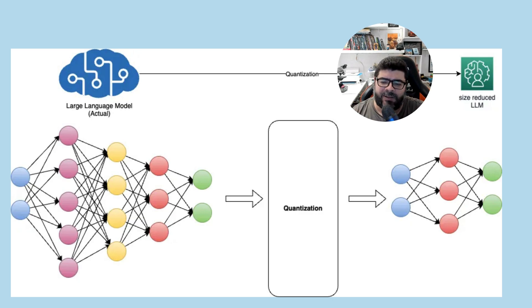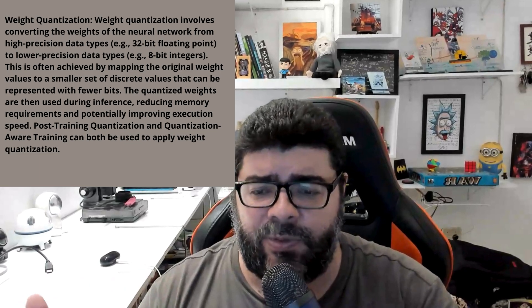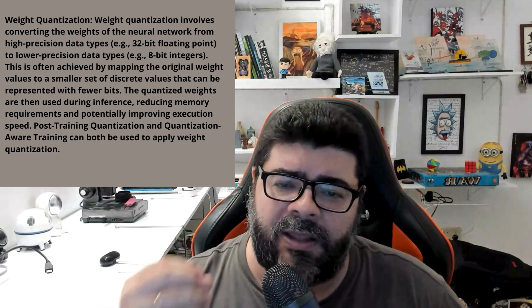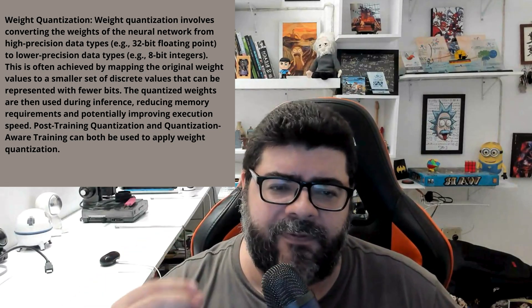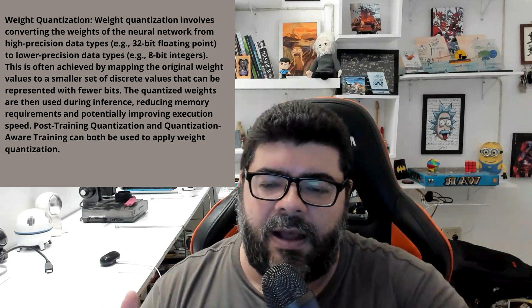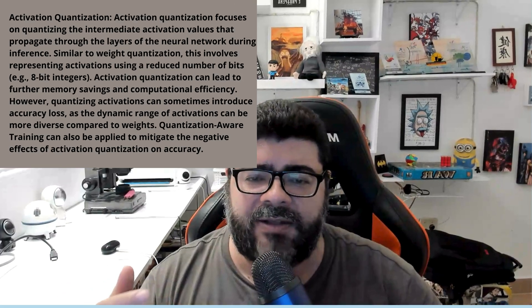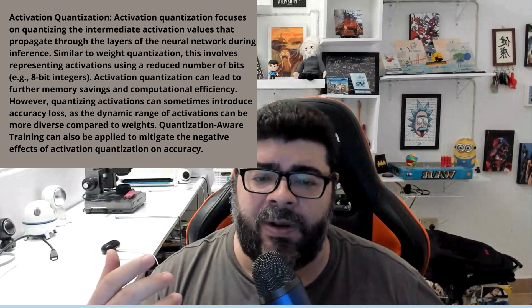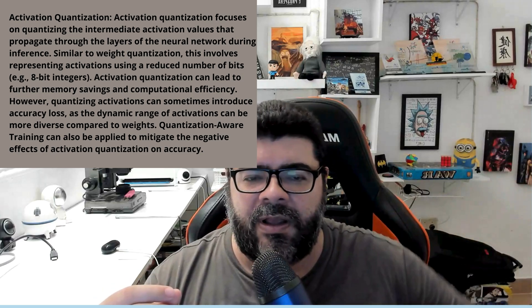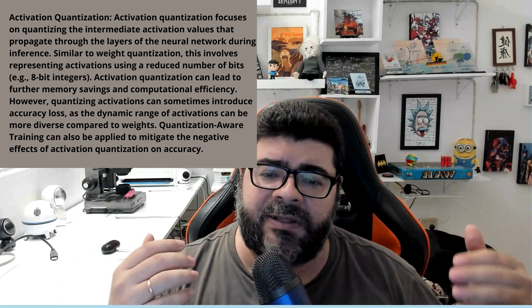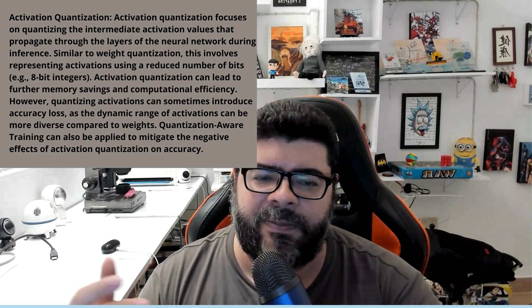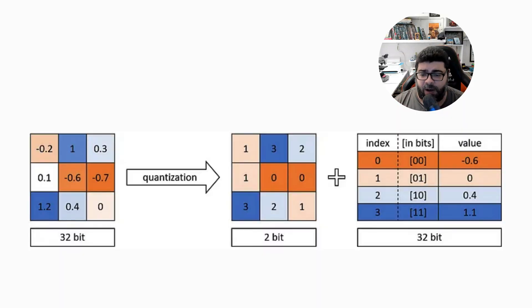There are two main types of quantization. The first type is weight quantization — you change high precision data types like floating point to lower precision data types like integers. The other type is activation quantization, which applies quantization to the intermediate activation values that propagate through the layers of the neural network, representing them with a reduced number of bits, such as 8-bit integers.